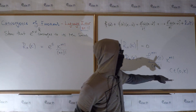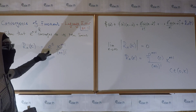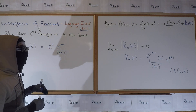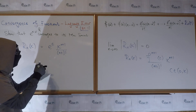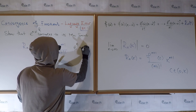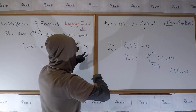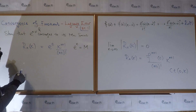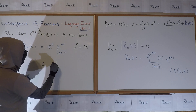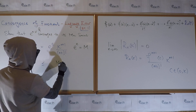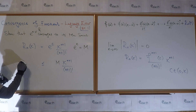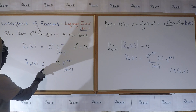Now e^c, for c between 0 and x, is just some real number. We need to pick c so that e^c is maximal — as big as possible. Whatever the biggest value e^c can take, it's just some constant. We call it M, the maximum value e takes on [0, x]. Therefore |R_n(x)| ≤ M · |x|^(n+1) / (n+1)!.